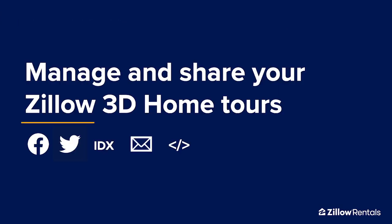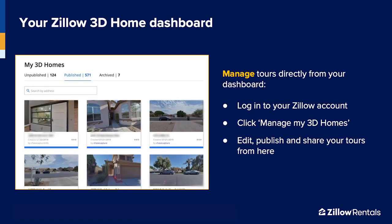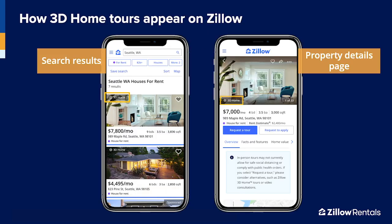Now let's talk about how to manage and share your tours. You can edit, share, and publish your tours from your Zillow dashboard. To access your dashboard, log into your Zillow account and click 'Manage My 3D Homes.' Add the tour to your listing and use the unbranded link to share it on social media, your own website, and beyond. As you can see, listings with 3D home tours stand out on Zillow. We make sure renters know a property has a 3D home tour, and renters can even filter their search so they see only properties with 3D home tours.